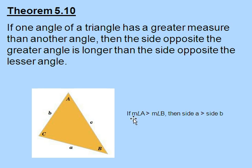So in this picture, the measure of angle A, we're saying, is greater than the measure of angle B, then that means the side opposite angle A is going to be greater than side b.